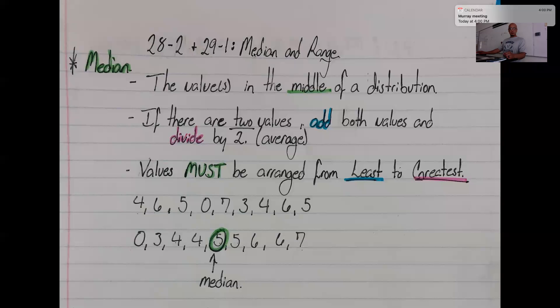When we're talking about the median, notice how the word median sounds a lot like the word medium. That's because they share the same root, both meaning the middle. So not the highest, not the lowest, but the middle. Median refers to the values in the middle of a distribution. For example, down here, we have this distribution of nine values: 4, 6, 5, 0, 7, 3, 4, 6, and 5. Oftentimes, in the distribution, values will repeat.